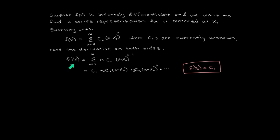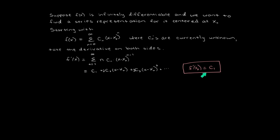Here's where the trick comes in. Notice that if we set x equal to x-naught, a lot of these terms go away — this one equals 0, that one equals 0 — and we're just left with c1. So plugging x-naught into the series representation for f prime equals just c1, because the other terms are 0.